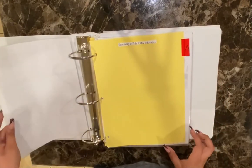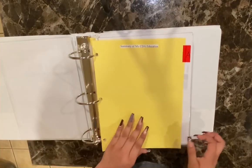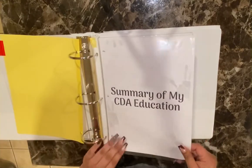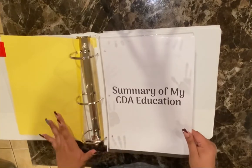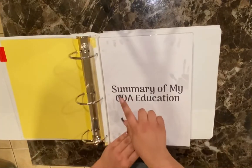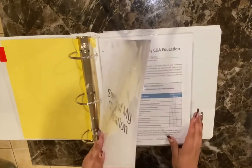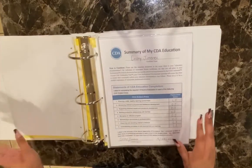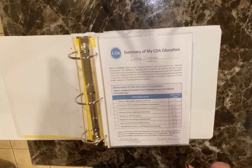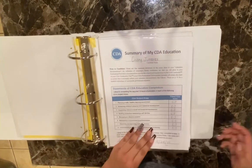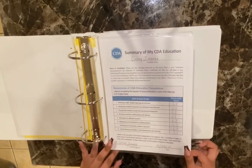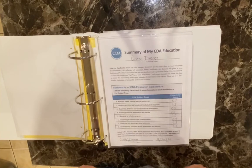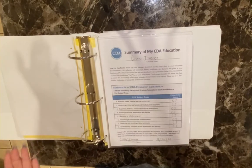For example, Tab A is the summary of my CDA education. I included an extra page — you don't have to do this, I just wanted to put a summary of my CDA education. When you get the book, it will go over everything that needs to go in each of these tabs.